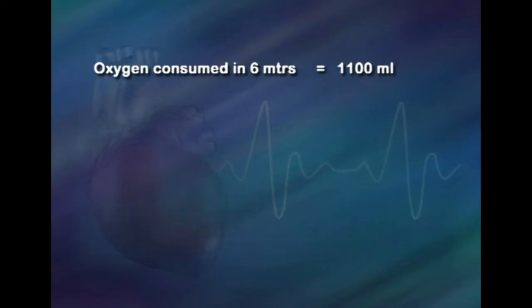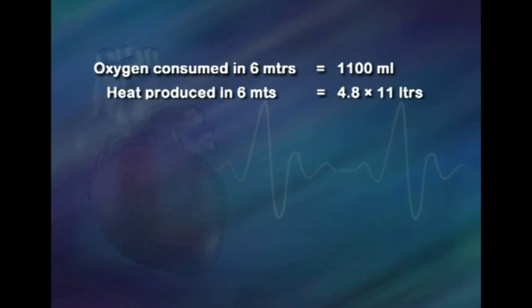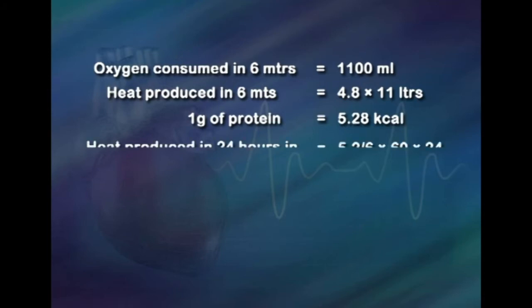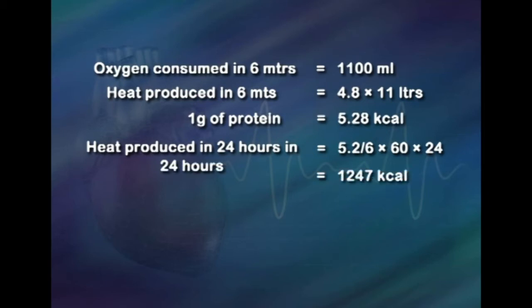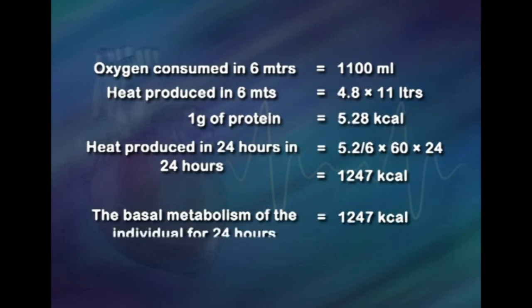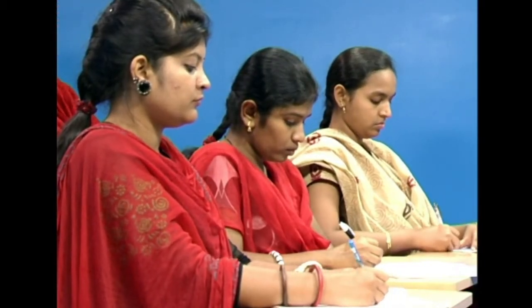Since the subject is in a post-absorptive stage, RQ is assumed to be 0.82 and the calorific value of 1 liter of oxygen consumed is taken as 4.8 kilocalories. For example, if oxygen consumed in 6 minutes is 1100 mL, heat produced in 6 minutes is 4.8 × 1.1 liters = 5.28 kilocalories. Heat produced in 24 hours is 5.28 ÷ 6 × 60 × 24 = 1247 kilocalories. Therefore, the basal metabolism of the individual for 24 hours is 1247 kilocalories, which is about 50 to 60 percent of the whole day's total energy expenditure.